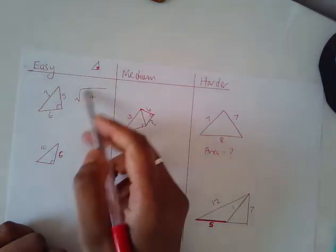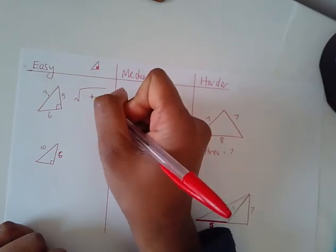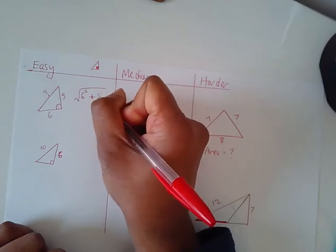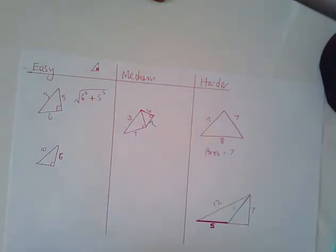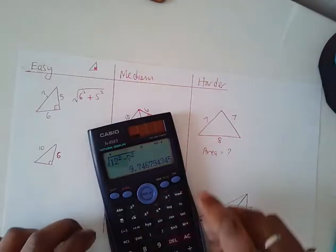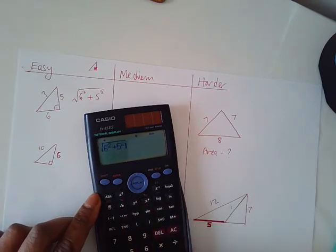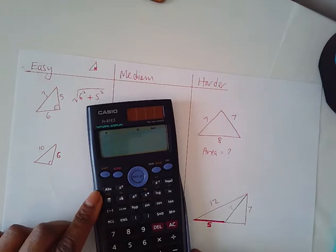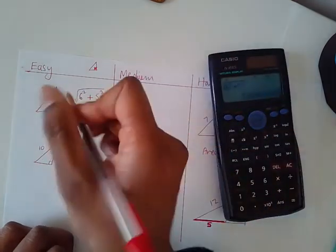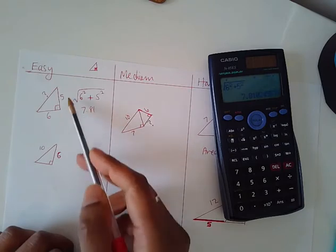To find the longest side, this is what you type in the calculator — press the square button. I always go for the big number first: 6 squared plus 5 squared. When you're trying to find the longest side, there's a plus. Put that in the calculator and press the SD button. The answer is 7.81, so this longer side is 7.81.